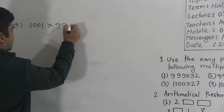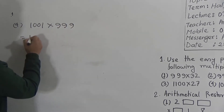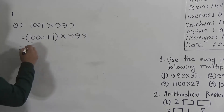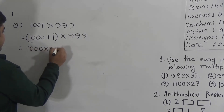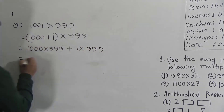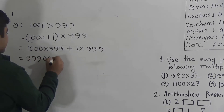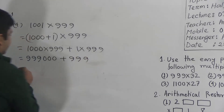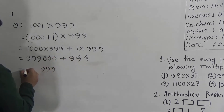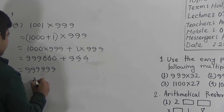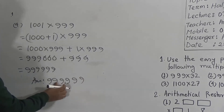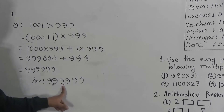Number 4: 1,001 multiplied by 9,999. So 1,001 is written as 1,000 plus 1. Multiply by 999. We compute 1,000 multiplied by 999 and 1 multiplied by 999. Adding the partial products gives 999,999 as the answer.